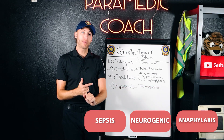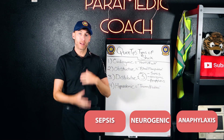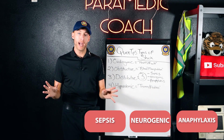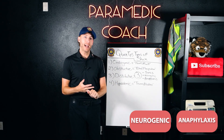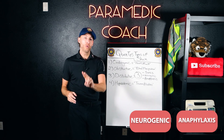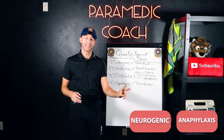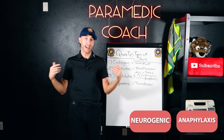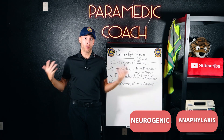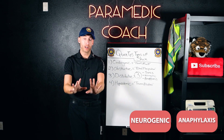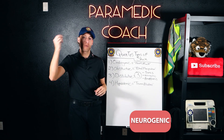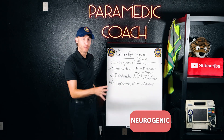Quickly: sepsis is a systemic infection in the bloodstream — that's bad. Anaphylaxis is when two or more body systems are being affected by an allergy — you have an allergic reaction, and that's not good. Neurogenic deals with the brain and spinal cord.